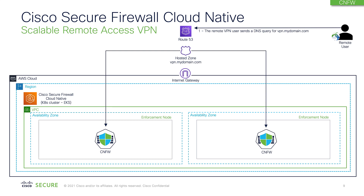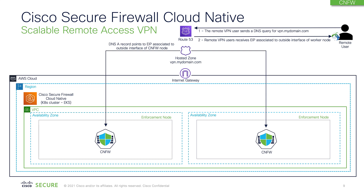A user on the internet will send out a request or a DNS query for VPN.mydomain.com, and in response to that query the user will get a reply with the public IP address associated to a CNFW. All the CNFWs are automatically added into Route 53 as DNS A records.